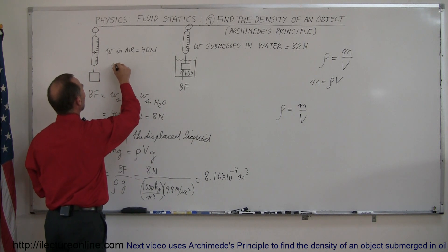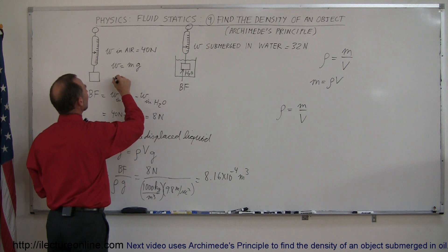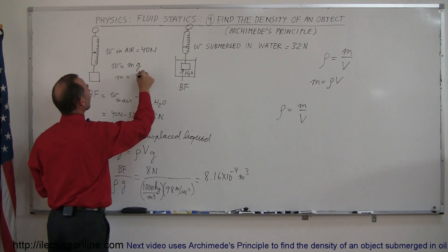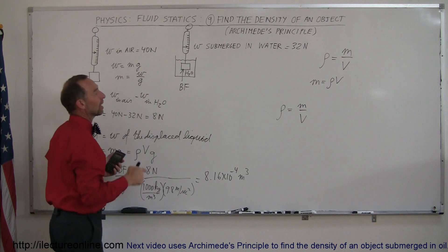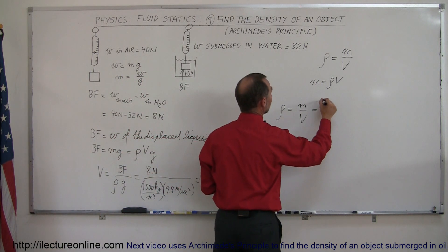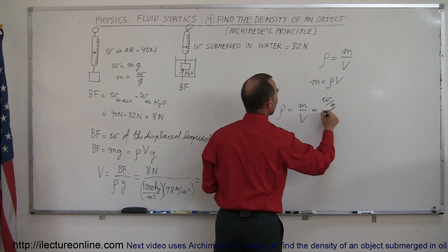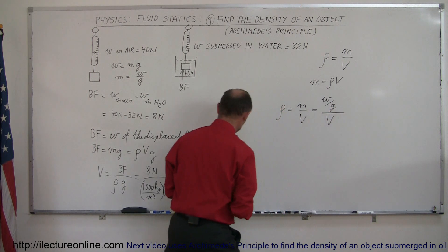And of course we know that the weight is equal to the mass times g. That means that the mass is equal to the weight divided by g. So we take the weight divided by g, that gives us the mass of the object, and that's what we plug in here. So this is equal to the weight divided by g, and then we divide that by the volume that we just found.